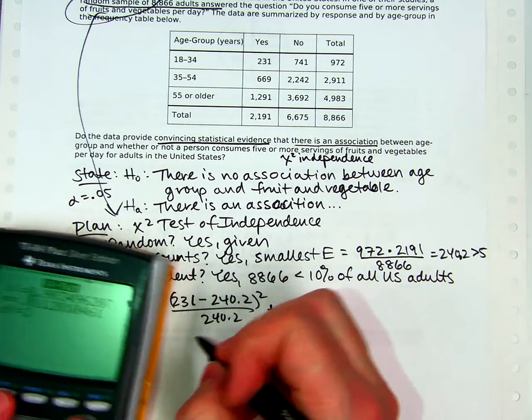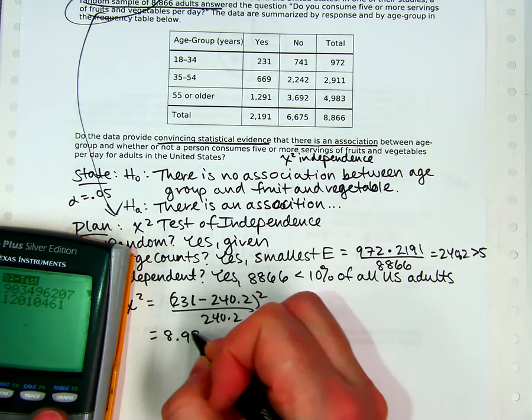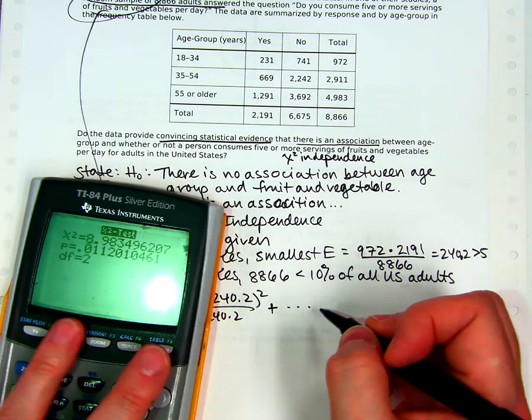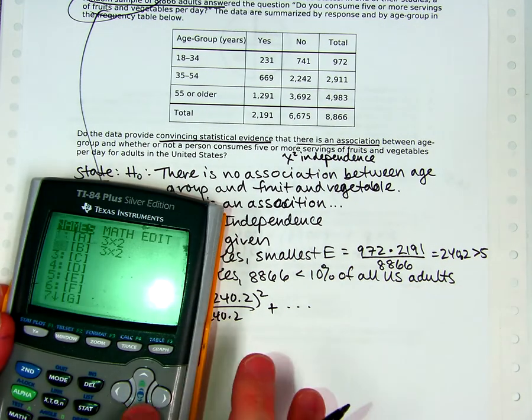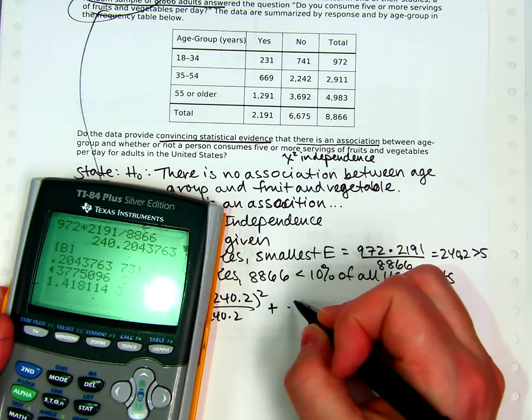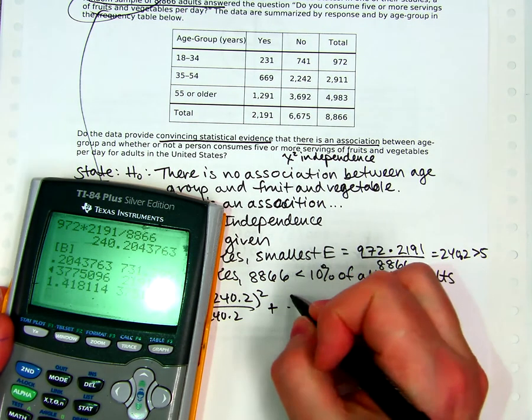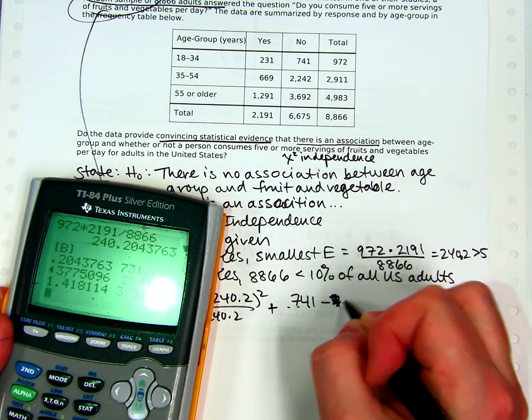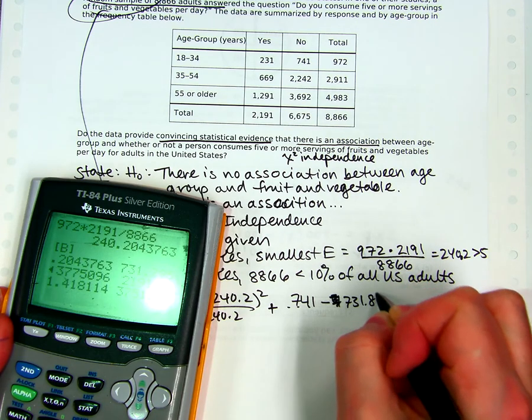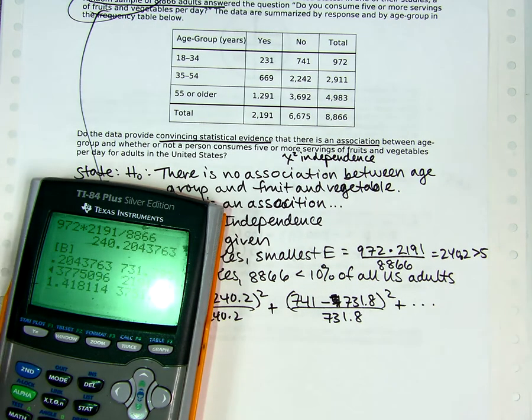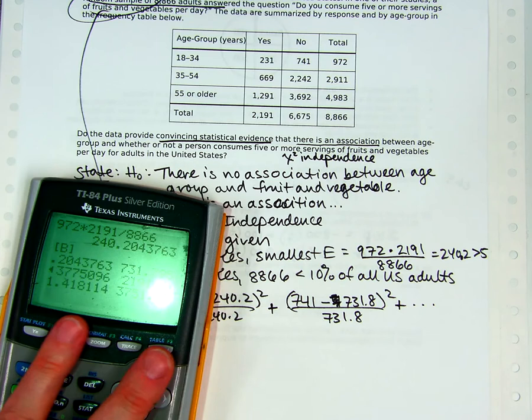So I got chi-squared equals 8.98. I could at this point go back and fill in another of these, since it just calculated the values. I just want to show you that. It's kind of a short cut. I could ask it to show me matrix B. And I could see that the second expected value is 731.8. And so I could go ahead and show off my formula knowledge a little bit more by doing 741 minus 731.8 squared over 731.8, and then my dot dot dot. If I were taking the AP test I probably would do that.